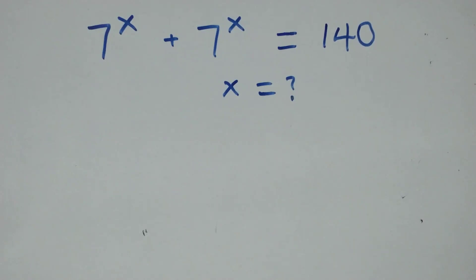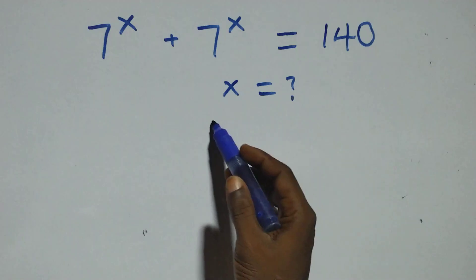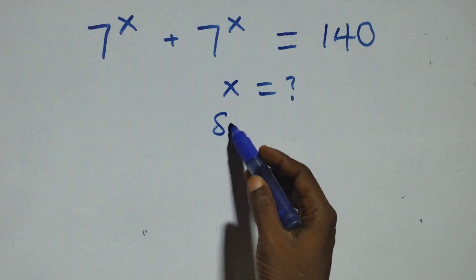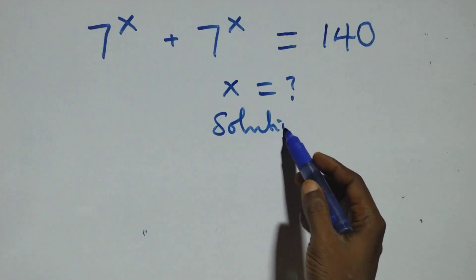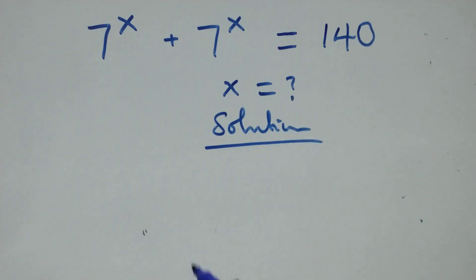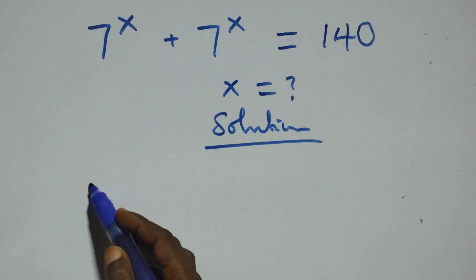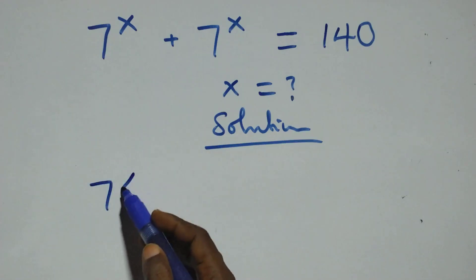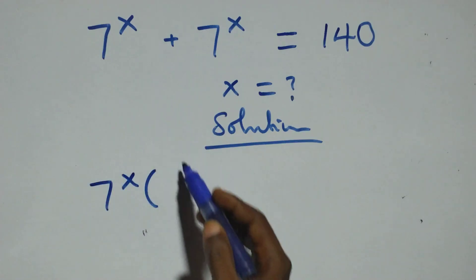Hello, you're welcome. Let's solve this nice exponential equation. From what we have here, we factor 7 raised to power x, and we have 7 raised to power x into brackets.